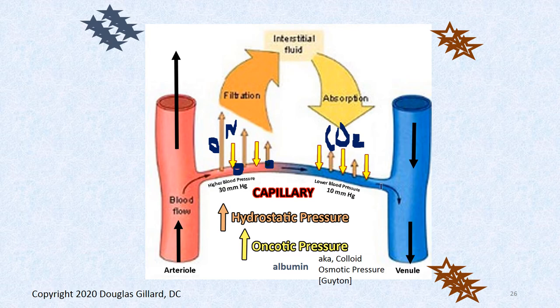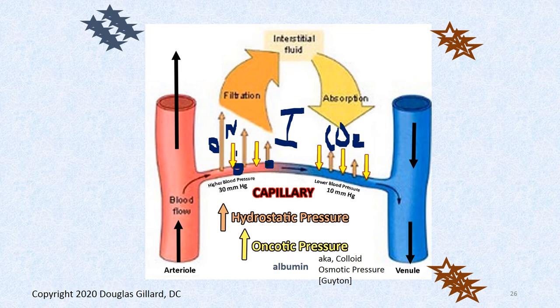There are actually four forces — hydrostatic pressure inside blood vessels, hydrostatic pressure of the interstitium, oncotic pressure of the blood, and oncotic pressure of the interstitium. But the interstitium's own hydrostatic and oncotic pressures are minuscule compared to those of the capillary, so for learning purposes it's better to not even think they exist. The force is always pushing out in the proximal capillary and pulling in at the distal capillary.